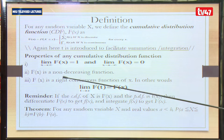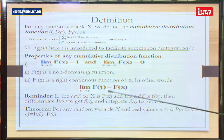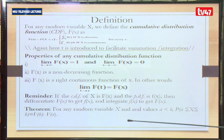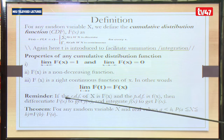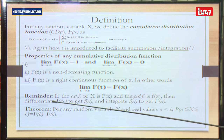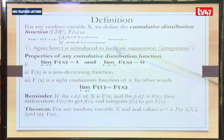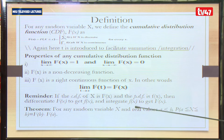As X increases from the smallest value, the CDF increases but does not exceed 1. F of X is a non-decreasing function — it must increase as X increases. F of X is also right-continuous, meaning the limit as T tends to X of F(T) equals F(X). We should remember: differentiate the CDF to get the PDF, and integrate the PDF to get the CDF.